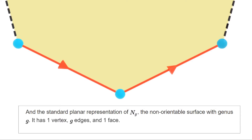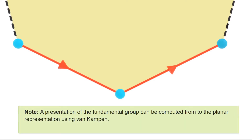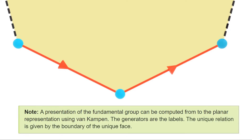A first remark that makes planar representations extremely useful is that the fundamental group of the surface is extremely easy to compute by applying van Kampen to the planar representation. The generators of the fundamental group are given by the edges — that is, the colors indexing the sides of the polygon — and the unique relation is the concatenation of edges obtained by walking along the boundary of the polygon.